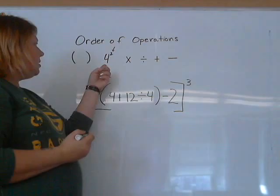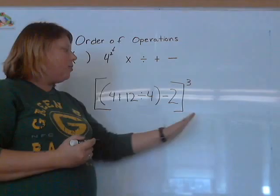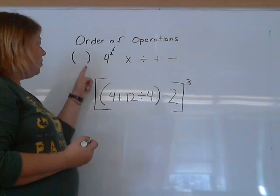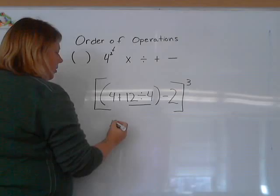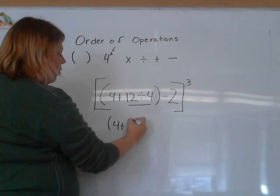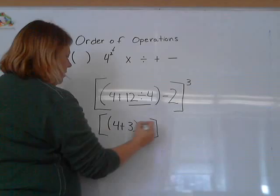Now the first thing that I would do when I see this, I would look at this exponent. Because exponents is one of the first things that we do. But we're not going to do that. Because it's outside of the bracket, that's going to be one of the last things that we do. So the first thing that we're going to do is a parenthesis. And within the parenthesis, we have a division problem. So we're going to go 4 plus 12 divided by 4 is 3, minus 2. And don't forget the brackets.